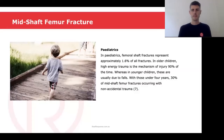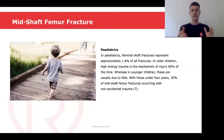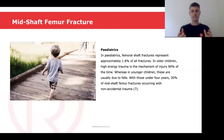In pediatrics, femoral shaft fractures represent approximately 1.6 percent of all fractures that occur. In older children, it's more likely to be due to high energy trauma as the mechanism of injury, and this is in 90 percent of the time. Whereas in younger children, these are usually due to falls. It is important to note that 30 percent of mid-shaft femur fractures in children under the age of four years old happen from non-accidental trauma.